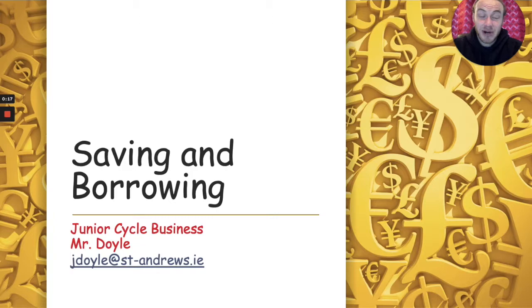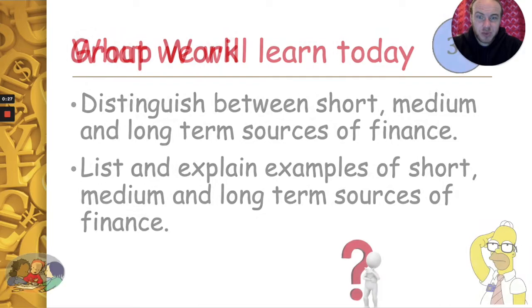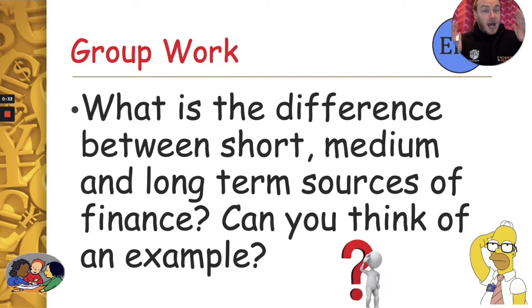Hello and you're very welcome to this video in our series on saving and borrowing for junior cycle business, based on learning outcome 1.5. In the video today we're going to look at the difference between short, medium and long-term sources of finance, and some examples of each. What's the difference between them? Can you give an example of each? Pause the video now, jot down a few ideas, and press play to continue.